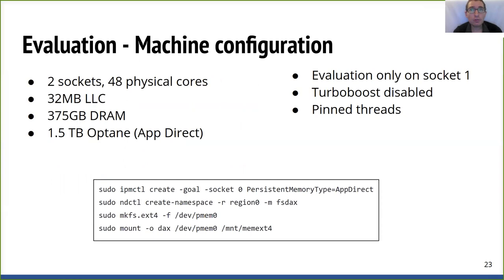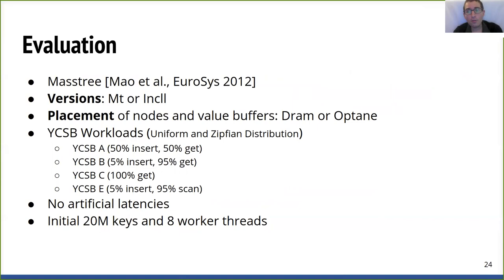These are the settings of the server equipped with Optane used for evaluation. We evaluate on a single socket by pinning threads and disabling turbo boost. Setting up the system to use NVM is straightforward: we use ipmctl to set the app-direct mode, and ndctl to create the persistent memory device, integrating 6 NVDIMMs per socket. We then install a file system and use the direct-access (DAX) feature to avoid the page cache and access persistent memory directly using loads and stores. For the rest of the evaluation, we present two versions of Masstree where placement can either be DRAM or Optane, using YCSB workloads with uniform and Zipfian distribution, 20 million keys, and 8 worker threads.